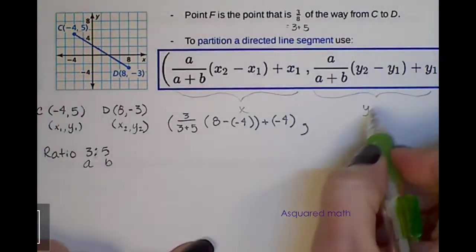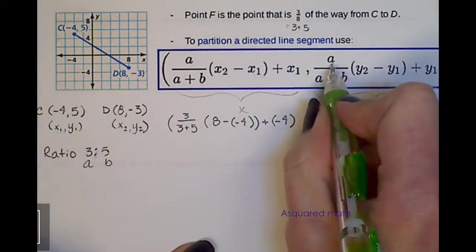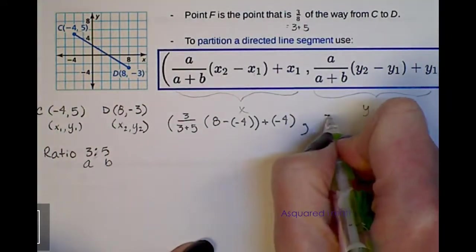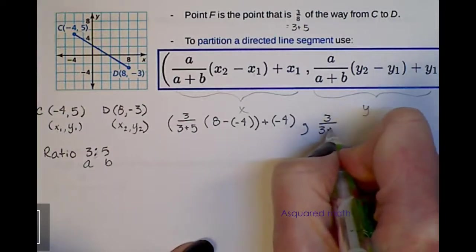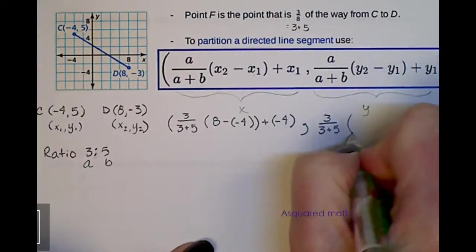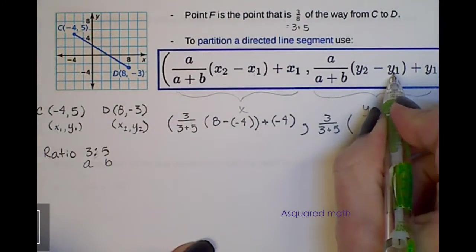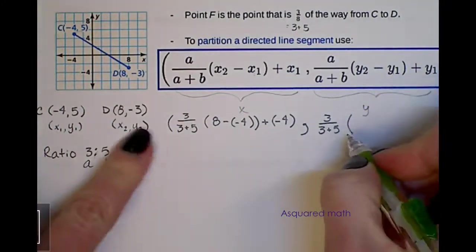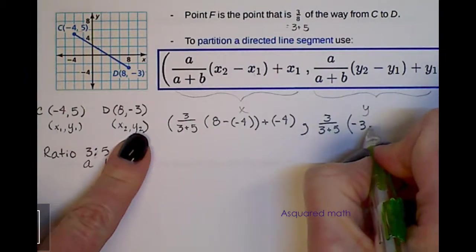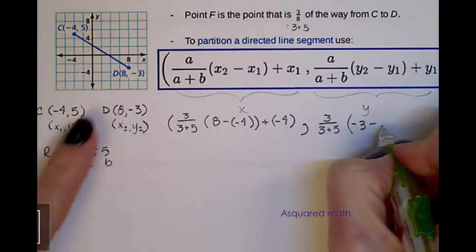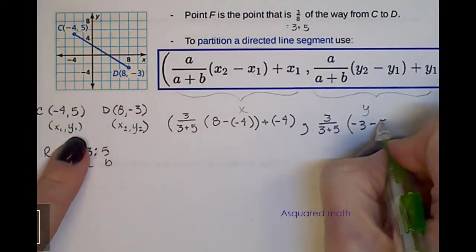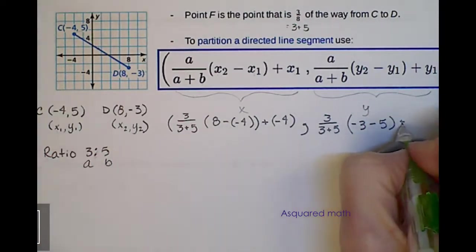And then that ends our first, our x coordinate. Now we'll work with the y coordinate. So again, a over a plus b gives us 3 over 3 plus 5. And then we're multiplying it by the difference in our y, our change in y. So y2 is negative 3 minus y1, which is 5. And then add y1, which is 5.